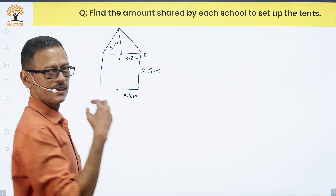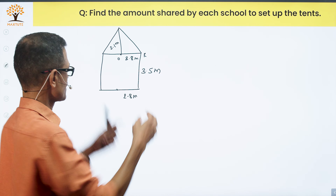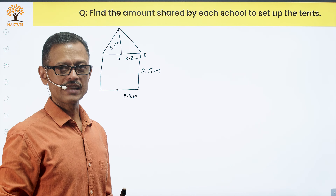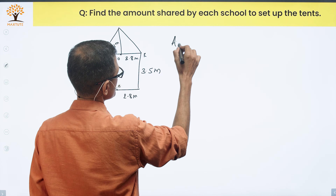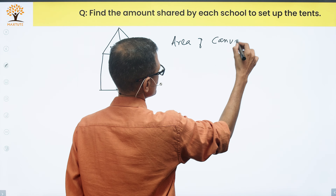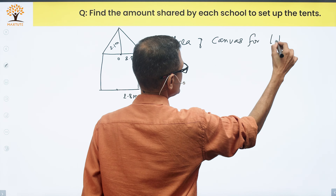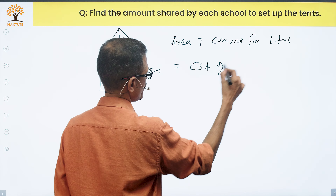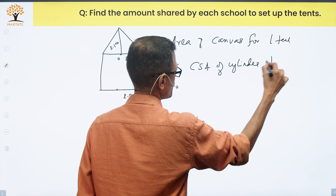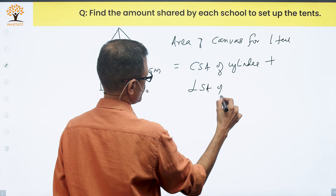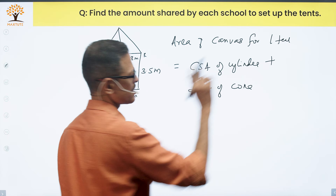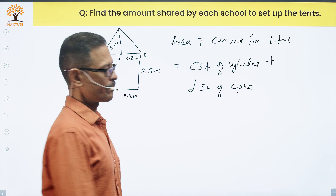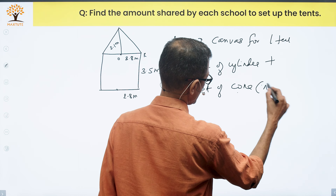The curved surface area of the cylinder is where we use canvas, and the lateral surface area of the cone also requires canvas. So the area of canvas for one tent equals the curved surface area of the cylinder plus the lateral surface area of the cone. CSA of cylinder is 2πrh. For the cone, the formula is πrl, where l is the slant height.